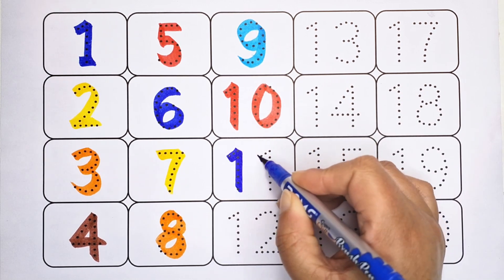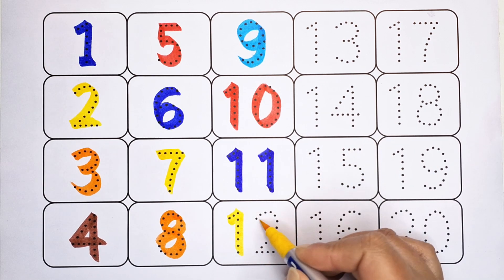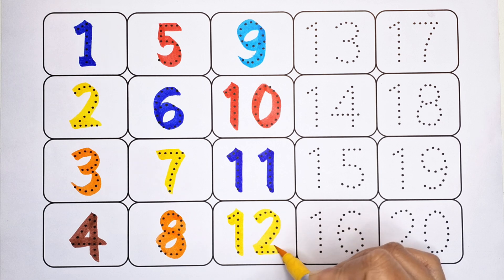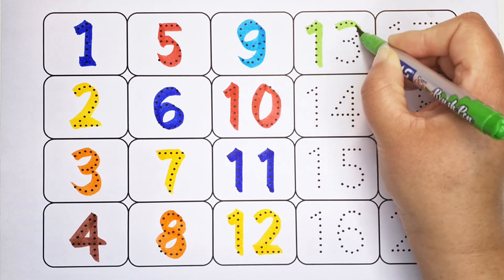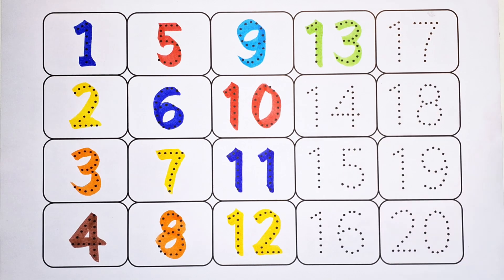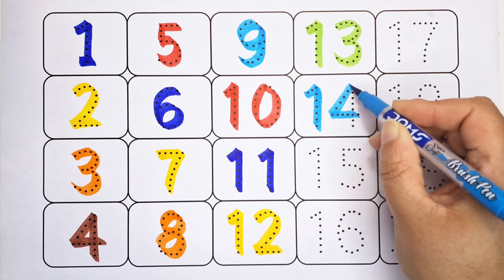One, one, number eleven. One, two, number twelve. One, three, number thirteen. One, four, number fourteen.